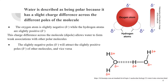Water is described as being polar because it has a slight charge difference across the different poles of the molecule. The oxygen atom is slightly negative while the hydrogen atoms are slightly positive. This charge difference allows water to form weak associations with other polar molecules — the slightly negative poles attract the slightly positive poles of other molecules and vice versa. When a positive hydrogen atom is attracted to a negative fluorine, oxygen, or nitrogen atom of another molecule, it forms a hydrogen bond. Hydrogen bonds are relatively stronger than other polar associations due to the high electronegativity of F, O, and N.